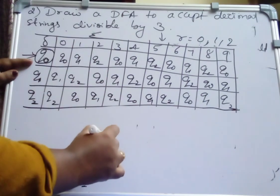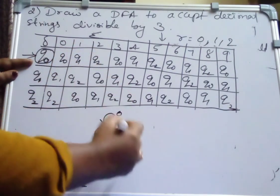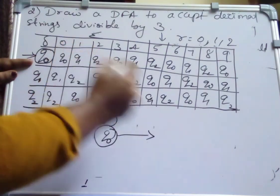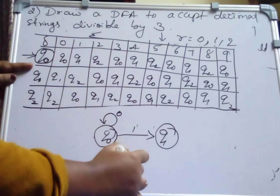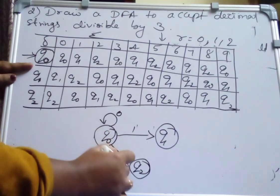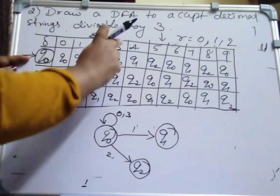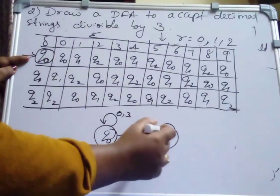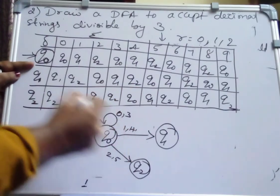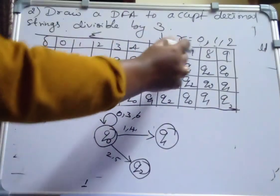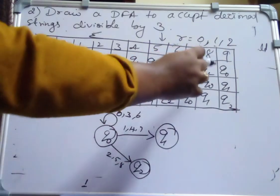Q0 on 0, it is going to Q0 itself, self-loop. Q0 on 1, it goes to Q1. Then Q0 on 2, it goes to Q2. So I am taking Q2 here. Q0 on 3 to Q0. Q0 on 4 to Q1. Already 1 we have written, now 4 is coming. Then Q0 on 5 to Q2. Q0 on 6 to Q0. Q0 on 7 to Q1. Q0 on 8 to Q2. Q0 on 9 to Q0.